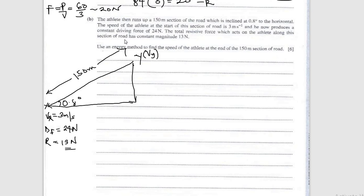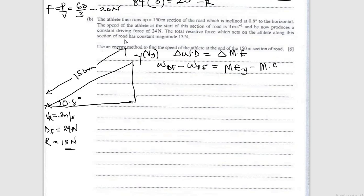The energy method: work done on the athlete = change in mechanical energy. Work done by driving force minus work done by resistive force equals mechanical energy at Y minus mechanical energy at X.